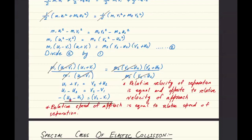So this basically is u2 minus u1, because the difference of velocities before collision—you can say it's the relative velocity of approach—and this is v2 minus v1, that's the relative velocity of separation.